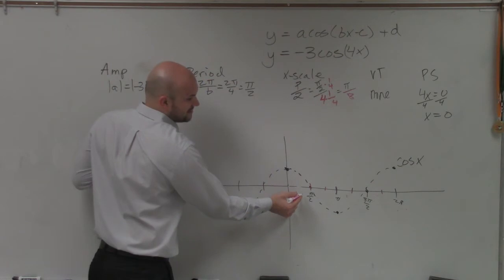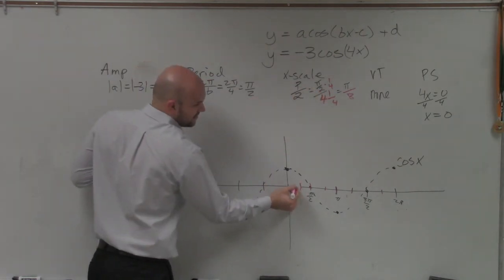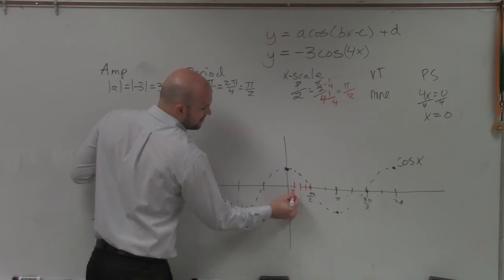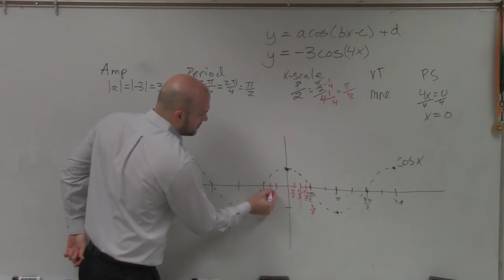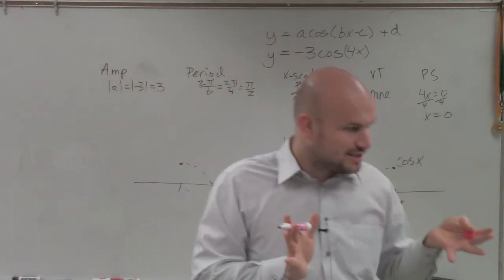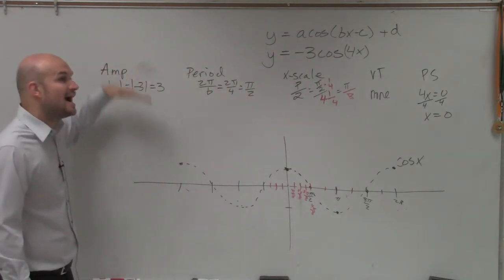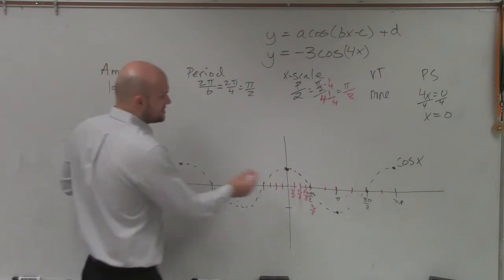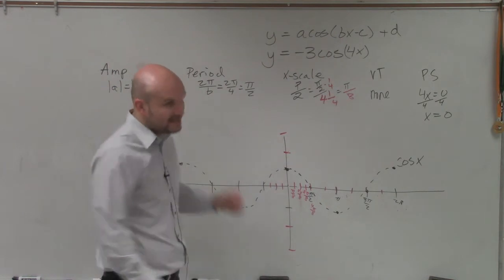If that's π halves, then I pretty much have four important points that are going to be here. So I have π over 8, 2π over 8, 3π over 8, and then that would be 4π over 8, which is π halves. So you can see that this scale has now been dramatically scrunched together. The next thing is we notice our amplitude. Now the graph is going to go as high as 3 and as low as 3. So instead of going up to 1, I'm now going to go up to 3 and as far down as 3.